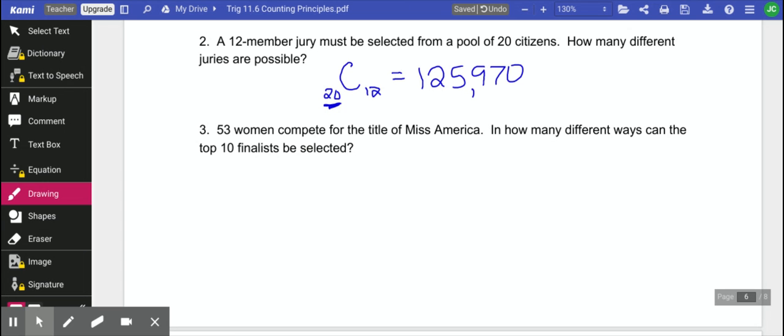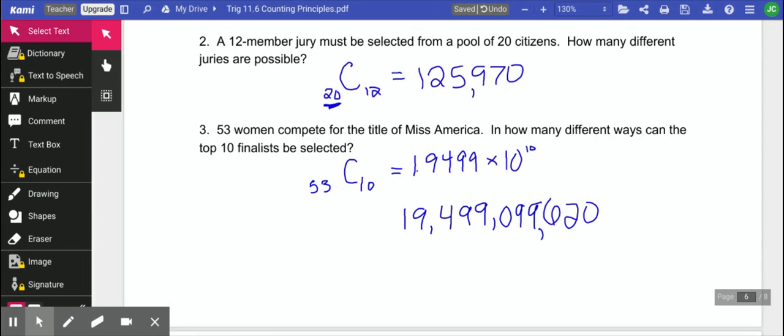We have 53 women competing for the title of Miss America. How many different ways can the top 10 finalists be selected? Now order doesn't matter here. It's just you're going on to the next round. So we have 53 and we are going to choose 10 of them, which is a big number my calculator does in scientific notation, 1.9499 times 10 to the 10th. Lots of ways to choose those finalists.